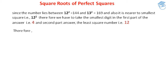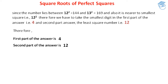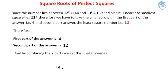Therefore, what we have got here is the first part of the answer is 4 and the second part of the answer is 12. By combining these two parts — the second part with the first part — we get the final answer. We can say that the square root of 15376 is equal to 124. This is the way how we can use the square roots of perfect squares methodology in Vedic mathematics.